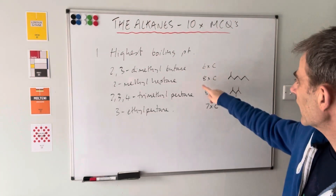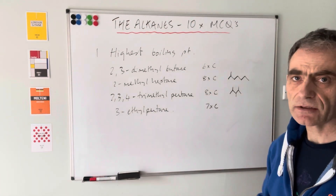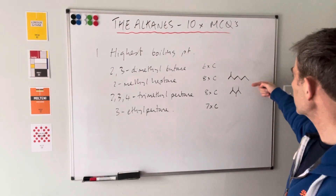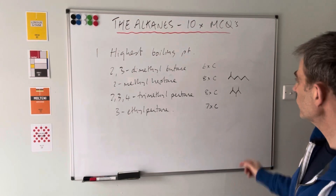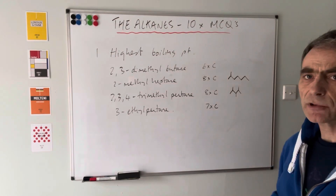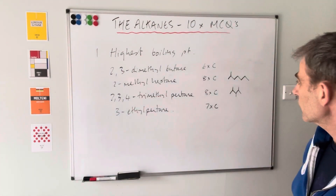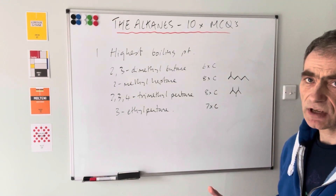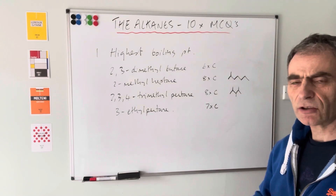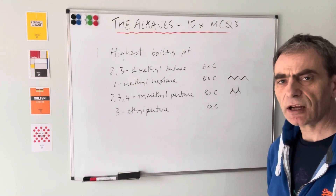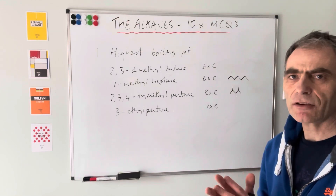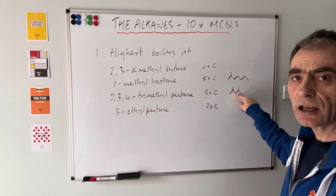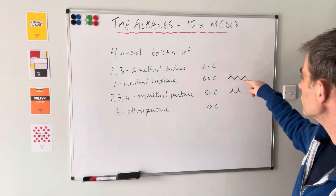The highest boiling point is going to be one of the eight-carbon molecules, because you've got more electrons than the other two. Now we're looking at the amount of branching - the more branching a hydrocarbon has, the weaker the intermolecular forces, because there's less surface contact. So the more branched one will have the lower boiling point, and the less branched one will have the higher boiling point.